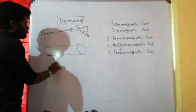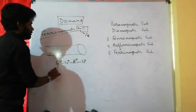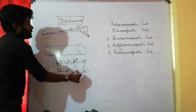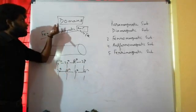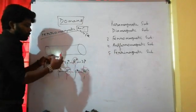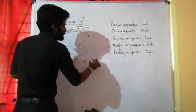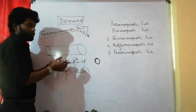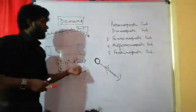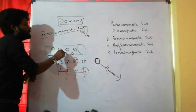Iron is an example of a ferromagnetic substance. In the case of solid state, especially ferromagnetic substances, these are metal ions — such as Fe²⁺ — and they group into a small region which is known as a domain.